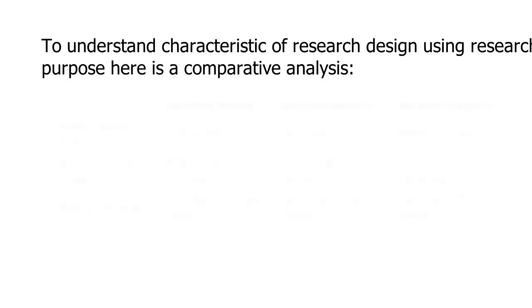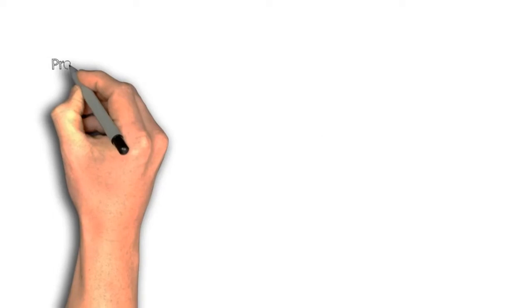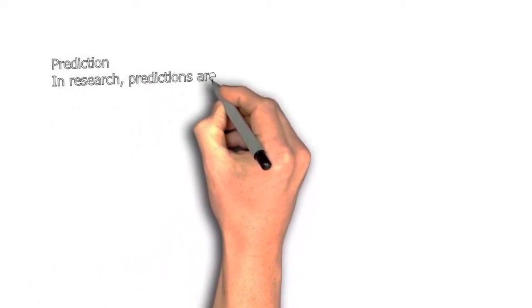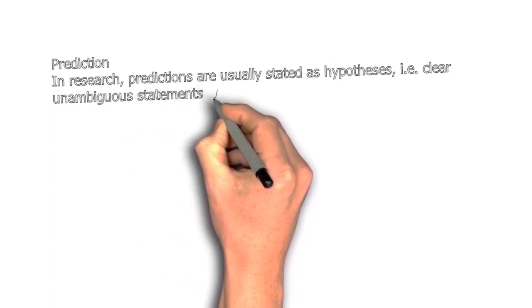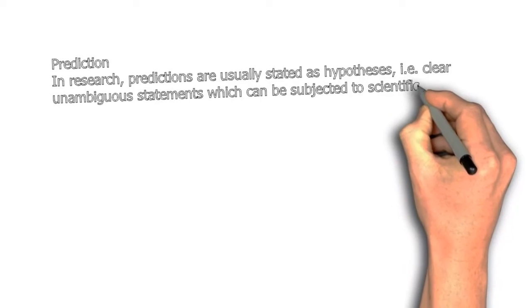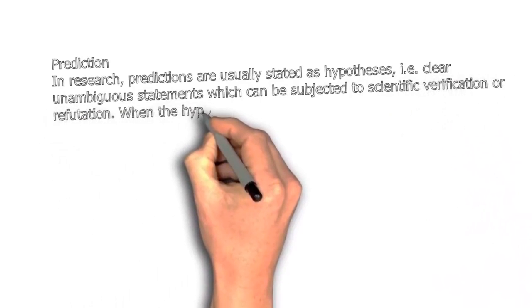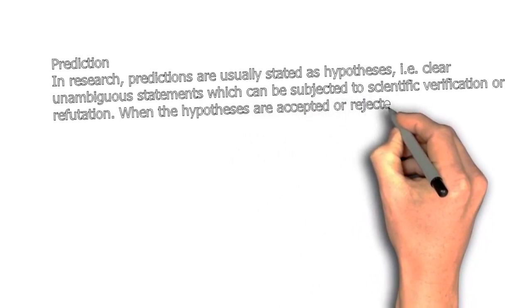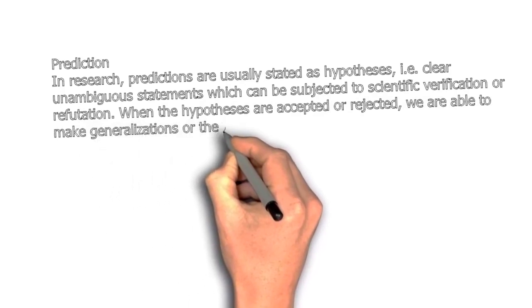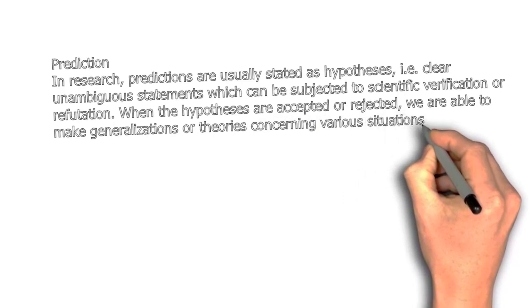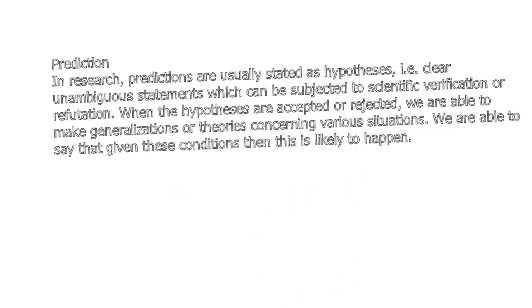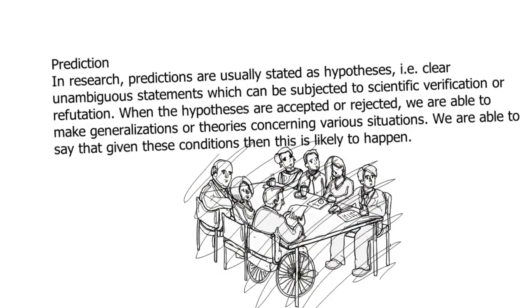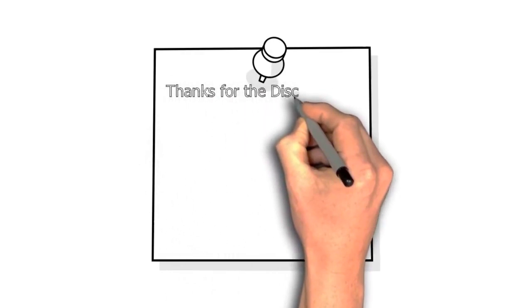To understand the characteristics of research design using research purpose, here is a comparative study. In research, predictions are very important. Predictions are usually stated as hypotheses—that is, clear, unambiguous statements which can be subjected to scientific verification or refutation. When the hypotheses are accepted or rejected, we are able to make generalizations and theories concerning various situations. We are able to say that given these conditions, this is likely to happen. This is a very good example of how in our thesis work we try to prove or disprove any existing hypothesis in a particular condition.